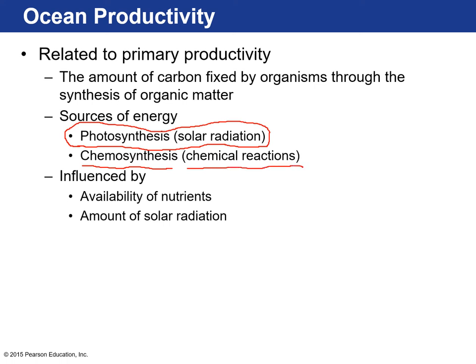What affects primary productivity is the availability of nutrients. Single-celled algae living on the surface photosynthesize, and their blooms only occur if there are sufficient nutrients available. If nutrients are available, you get huge algal blooms producing a lot of organic matter. You need two things: nutrients and solar radiation.